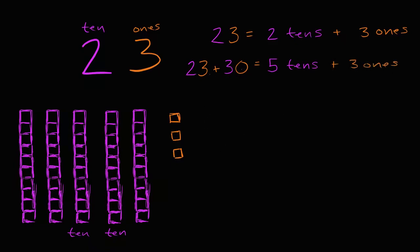So what's 23 plus 30 going to be? Let me rewrite it. Twenty three plus 30 is going to be equal to, well, five tens. We could just write that as a five in the tens place. Represents five tens, or 50.